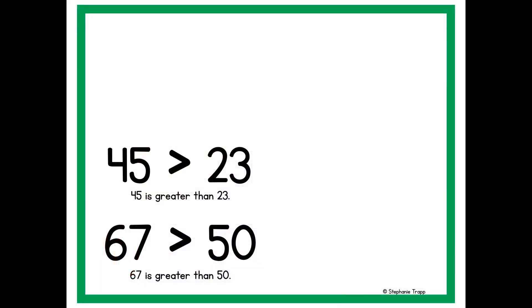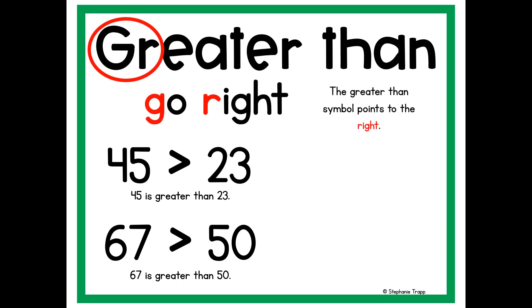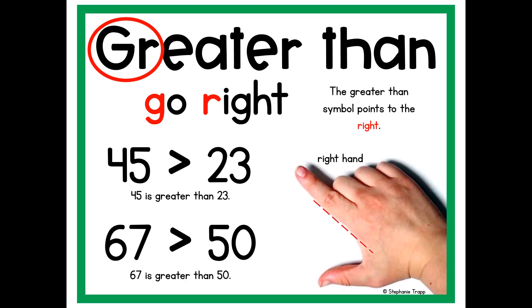Here are two posters I used to teach the greater than, less than symbol to my students. For greater than, I tell them that the G-R in greater stands for go right. The greater than symbol always goes to the right or points to the right. Go right also as a reminder, you can look at your right hand and find the shape made between your index finger and your thumb. That's the greater than symbol. When you're drawing the greater than symbol, you also go right first with your pencil and then go back left to make the shape.